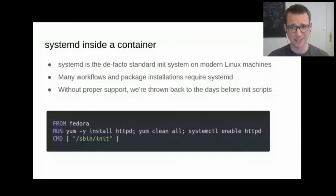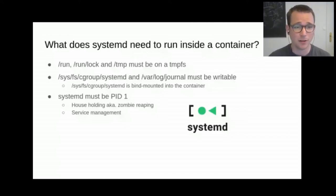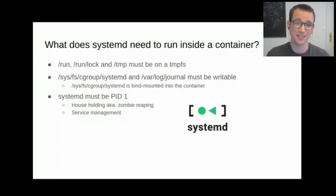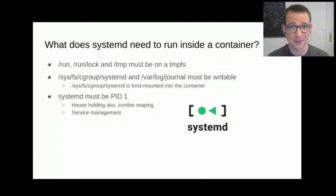When we look at what SystemD needs to run, it's not so much. We've got to set up a few mounts to make SystemD happy. For instance, we've got to mount /run, /run/lock, and /tmp as a tmpfs. Then the cgroup, SystemD, and /var/log/journal must be writable — SystemD wants to manage the cgroup and write to the journal. Also the SystemD cgroup is bind mounted into the container. And most importantly, SystemD must be PID1 in the PID namespace of the container — it's the init system, so it wants to reap zombies, manage services, and this only really works as PID1.